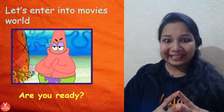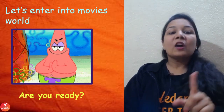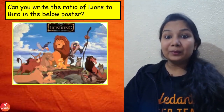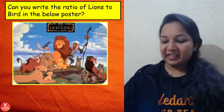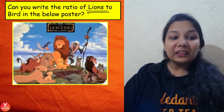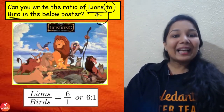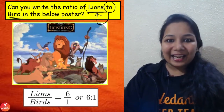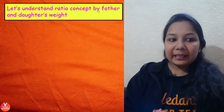Are you all ready to enter movies world? It's 2022 — let's start with the first example. Can you write the ratio of lions to birds in the below poster? First find the number of lions, then the number of birds. Whatever comes before 'to' in ratio is written first — lions are six in number, birds is just one, so it is 6:1. Fractions can also be expressed as ratios.